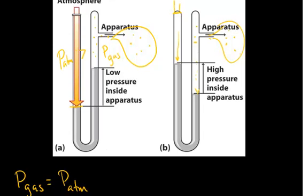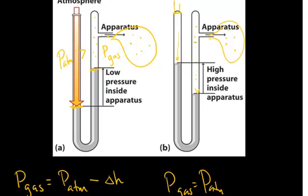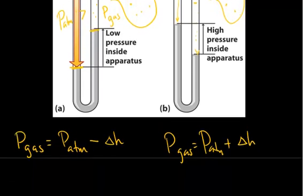So the pressure of the gas is going to be the atmospheric pressure less the height difference between the atmosphere and gas sides of the U-tube. In the other case, the pressure of the gas equals the atmospheric pressure plus the height difference between the atmosphere side and the gas side. This is a way to measure the gas pressure relative to atmospheric pressure.